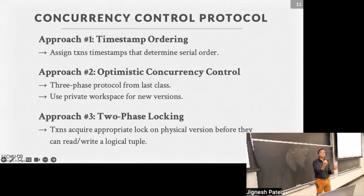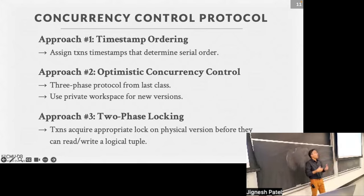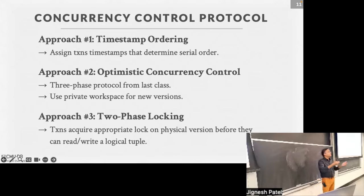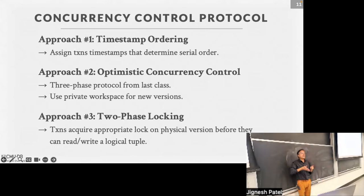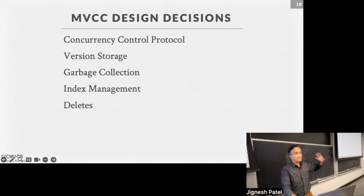MVCC as a mechanism can be combined with optimistic concurrency control, where you run the three-phase protocol with private workspaces keeping new versions, or with two-phase locking for objects being created. You can also use timestamp ordering - you grab a timestamp at the beginning of the transaction and only read versions as of that timestamp, which is kind of what snapshot isolation does.